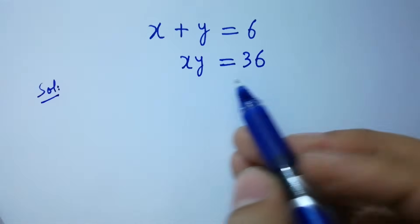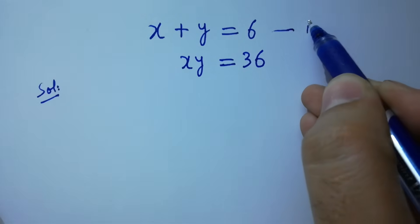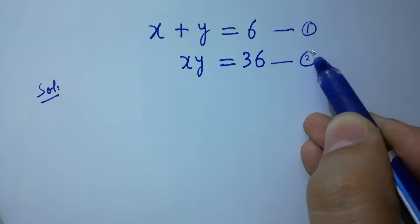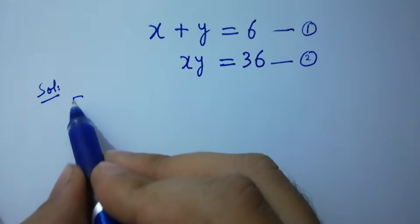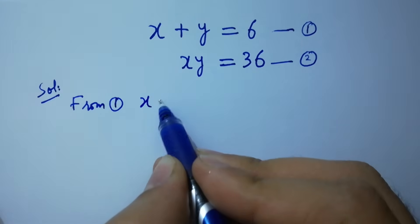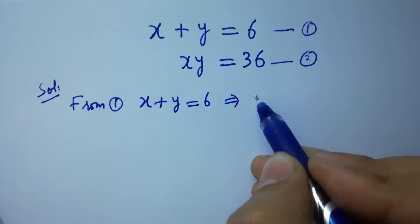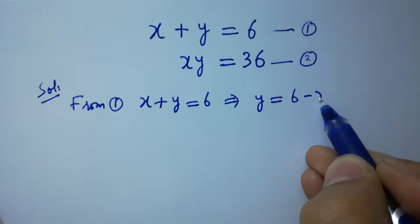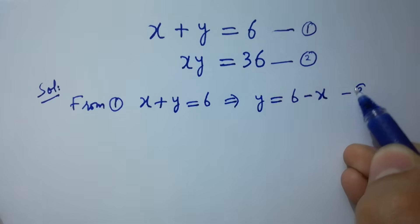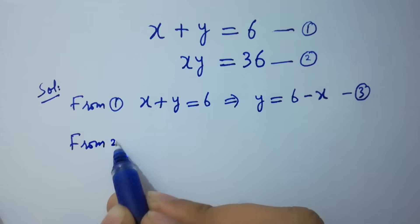To solve this, let x plus y equal to 6 be the first equation and x times y equal to 36 be the second equation. From the first equation, x plus y equals 6, so y equals 6 minus x. Take this as the third equation.